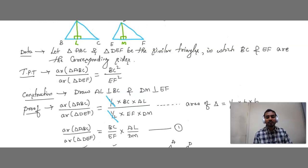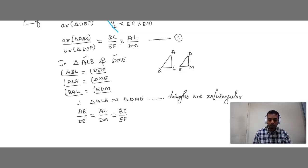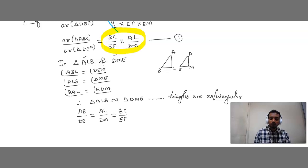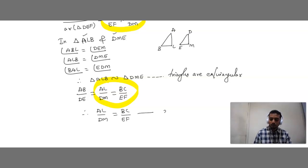Based on Equation 1, we need BC/EF and AL/DM. We choose AL/DM and BC/EF. Therefore, AL/DM = BC/EF. Let this be Equation 2. We substitute Equation 2 into Equation 1: the AL/DM term is replaced by BC/EF.